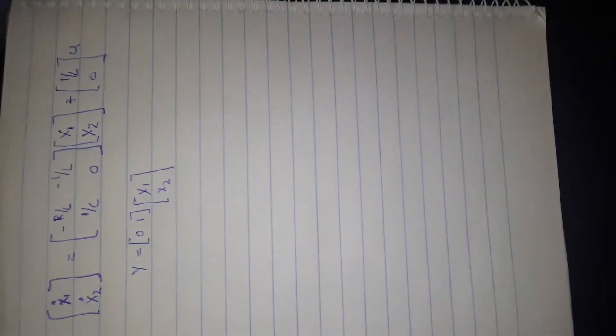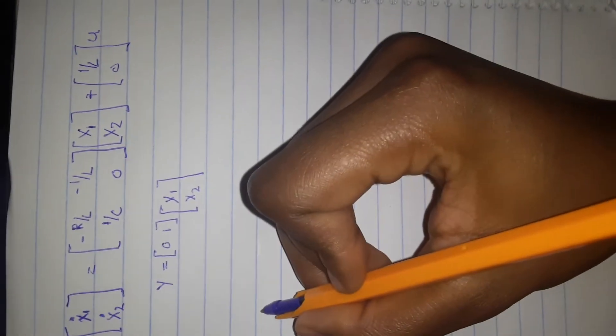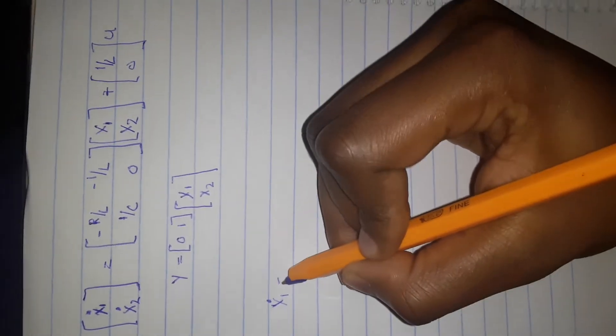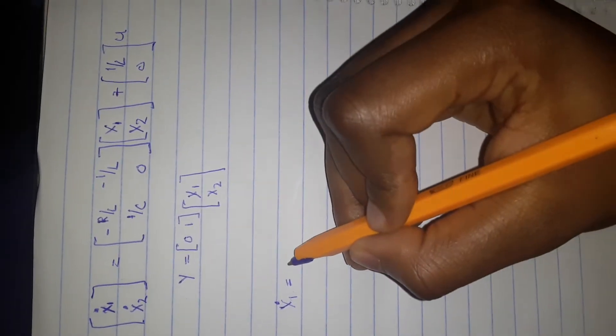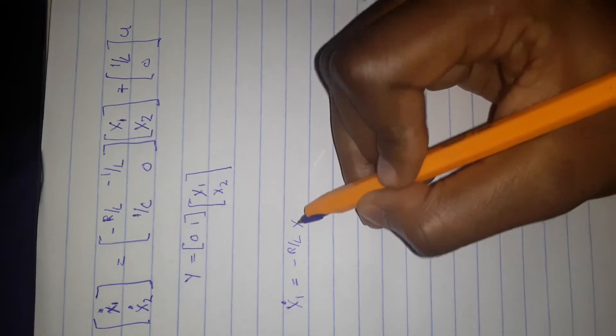Okay, so this is the form of the question which you sent me. I'm going to simplify it into equations first. So x1 derivative equals minus r over L x1